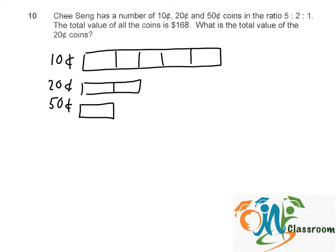Okay, we just let 10 cents be one unit, so every 10 cents unit will be one unit each. And for 20 cents, it is twice as much, so it will be two units.